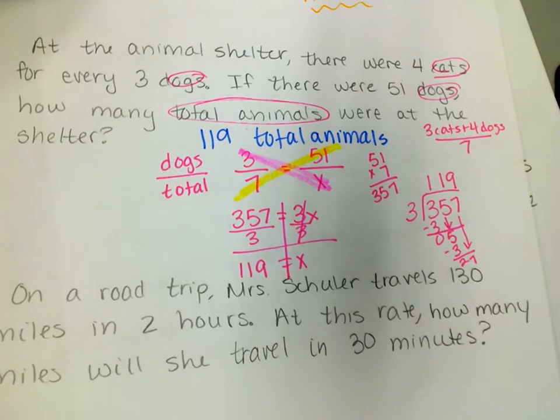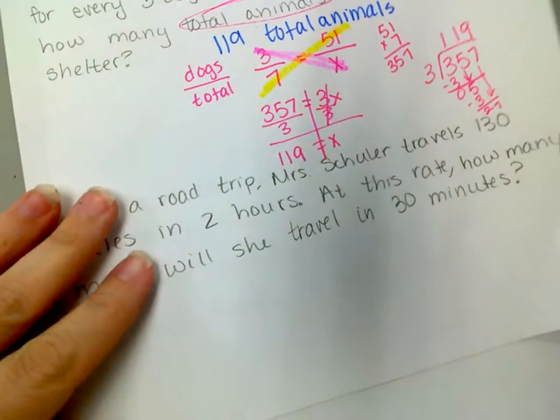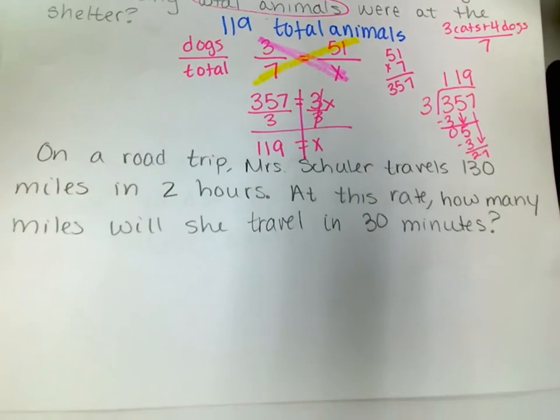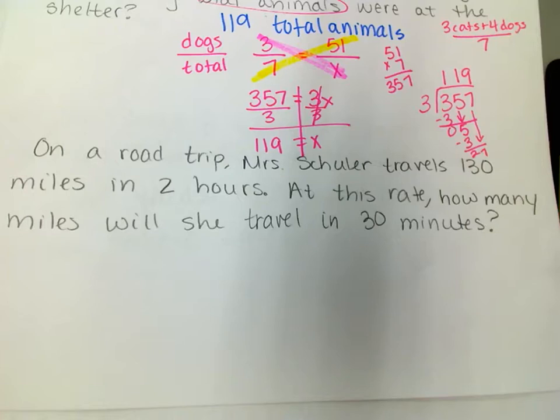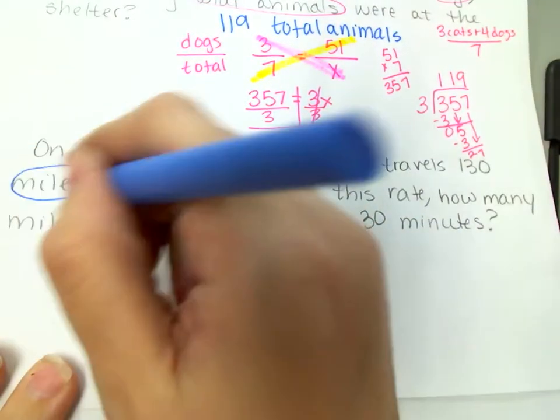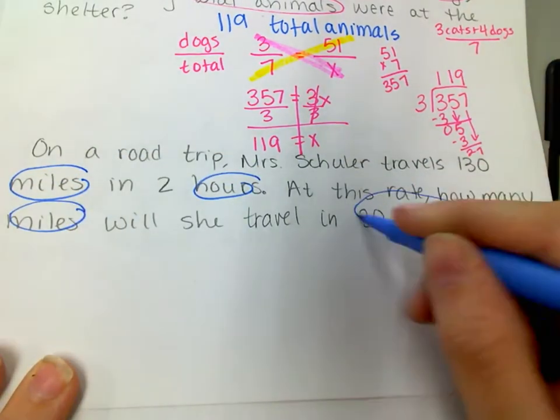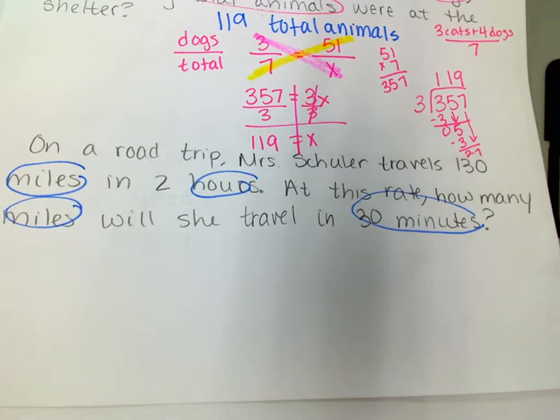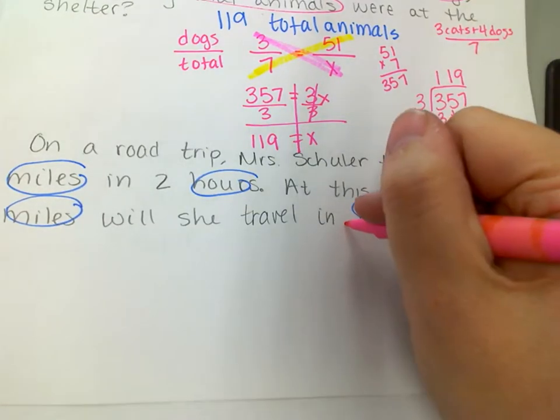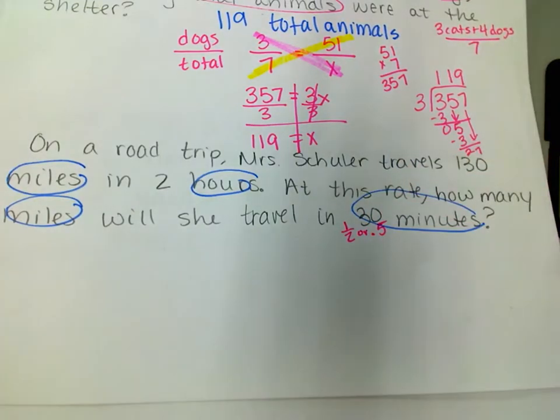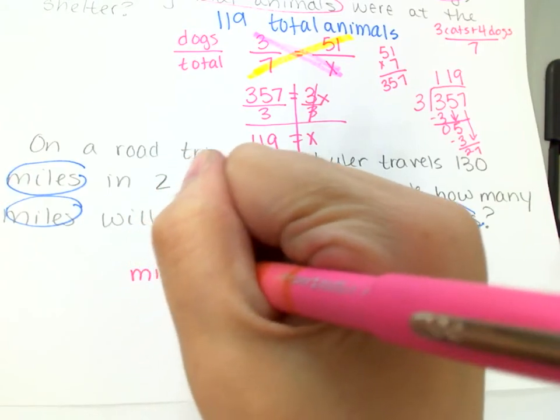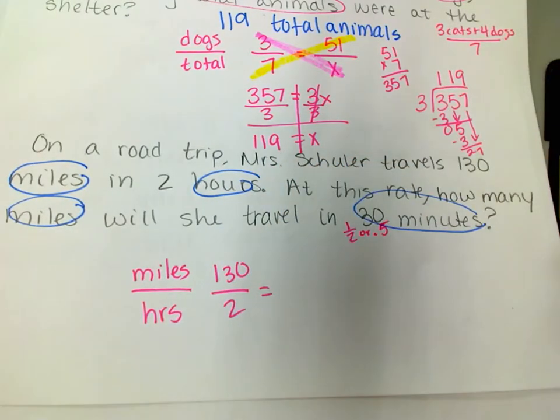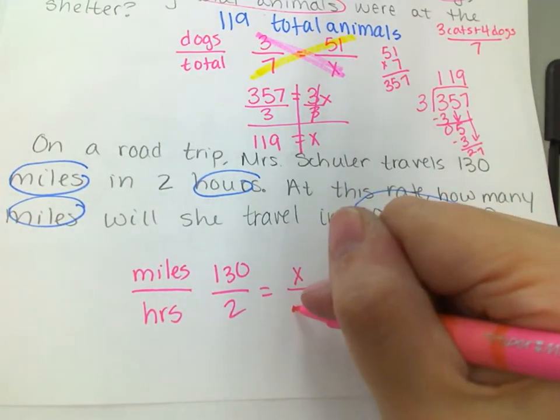Okay, let's do another one. On a road trip, Mrs. Shuler travels 130 miles in 2 hours. At this rate, how many miles will she travel in 30 minutes? So I'm talking about 130, I'm talking about miles and hours and miles and 30 minutes. So I can either change this to minutes or I can change this to hours. But 30 minutes, it's easy. 30 minutes would be what? Half of an hour, right? So I could say one-half or 0.5. Okay, so if I set this up of miles in hours, I have 130 miles in 2 hours and that's equal to x miles in 0.5, right?